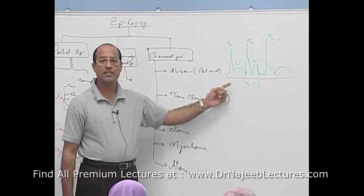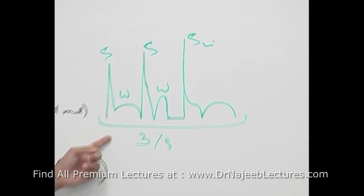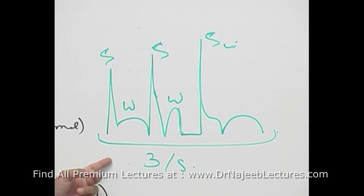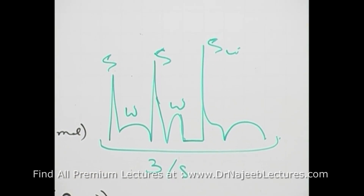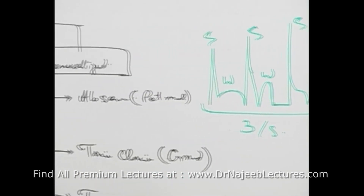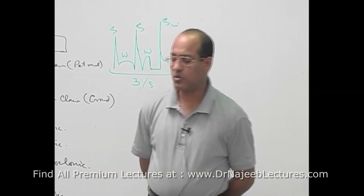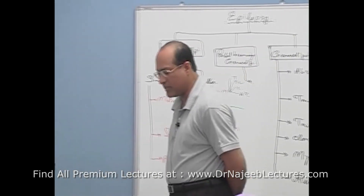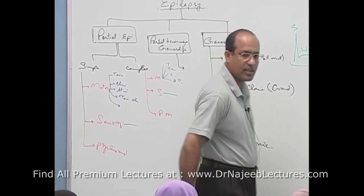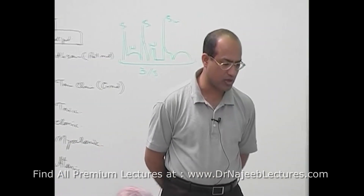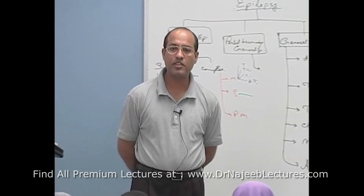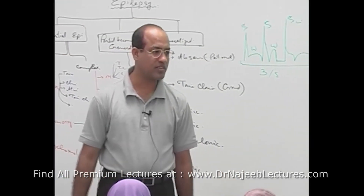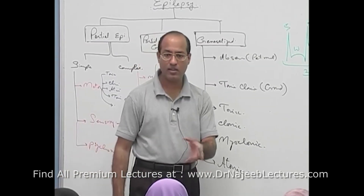This spike and wave pattern at 3 cycles per second is almost diagnostic for absence seizure. It is best treated by ethosuximide, which works by reducing calcium influx in thalamic neurons. This abnormal pattern of firing by thalamic neurons alters the conscious level but does not cause hypotonia, so the person does not fall down — which is typical of petit mal.